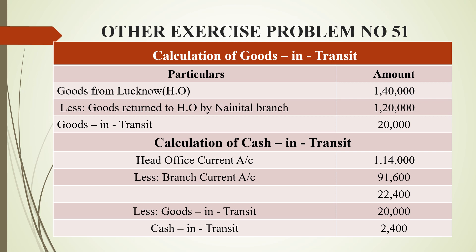First we have goods in transit. The head office sent goods worth 1,40,000 rupees to the branch, and the branch balance shows 20,000 rupees worth of goods that have not yet reached the destination — so goods in transit is 20,000 rupees. For cash in transit, the head office current account shows 1,14,000 rupees and the branch shows 91,600 rupees, giving a difference of 22,400 rupees. Deducting goods in transit of 20,000 rupees, cash in transit is 2,400 rupees.